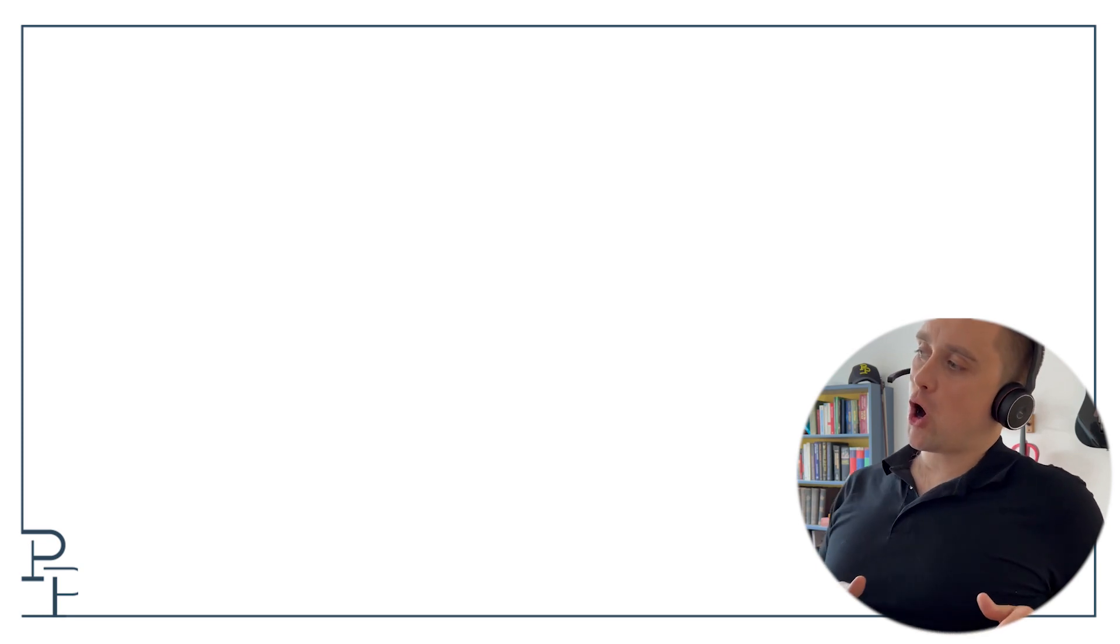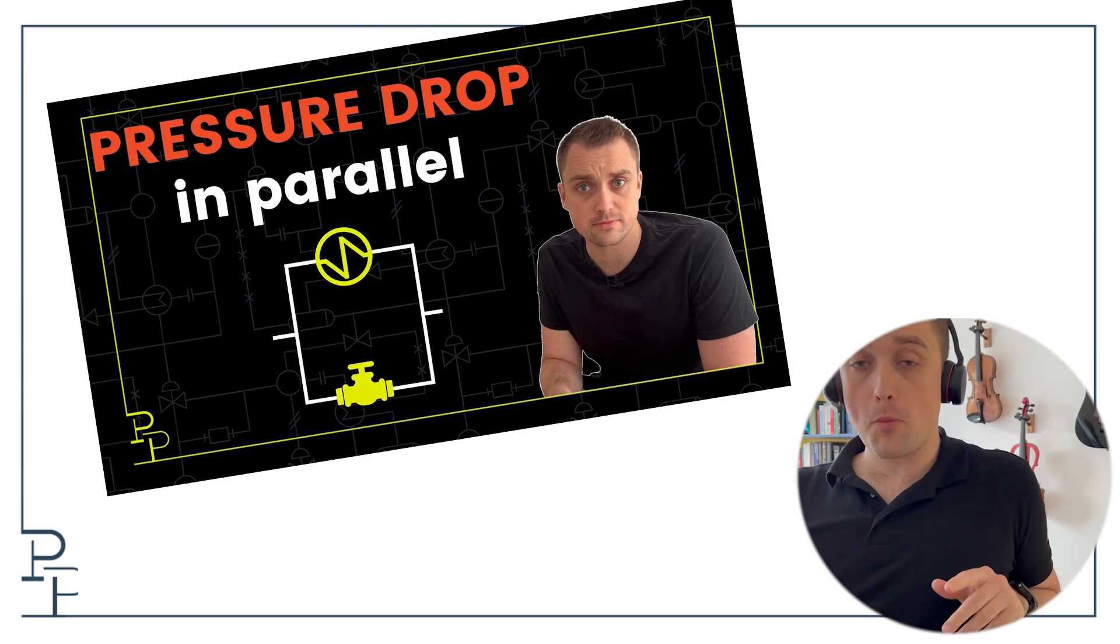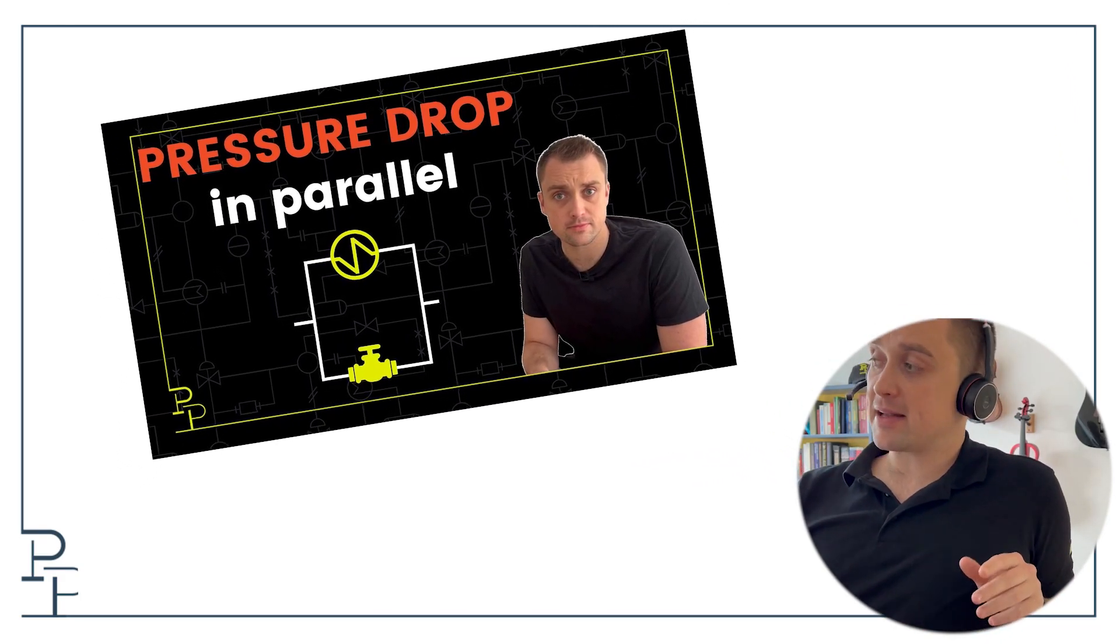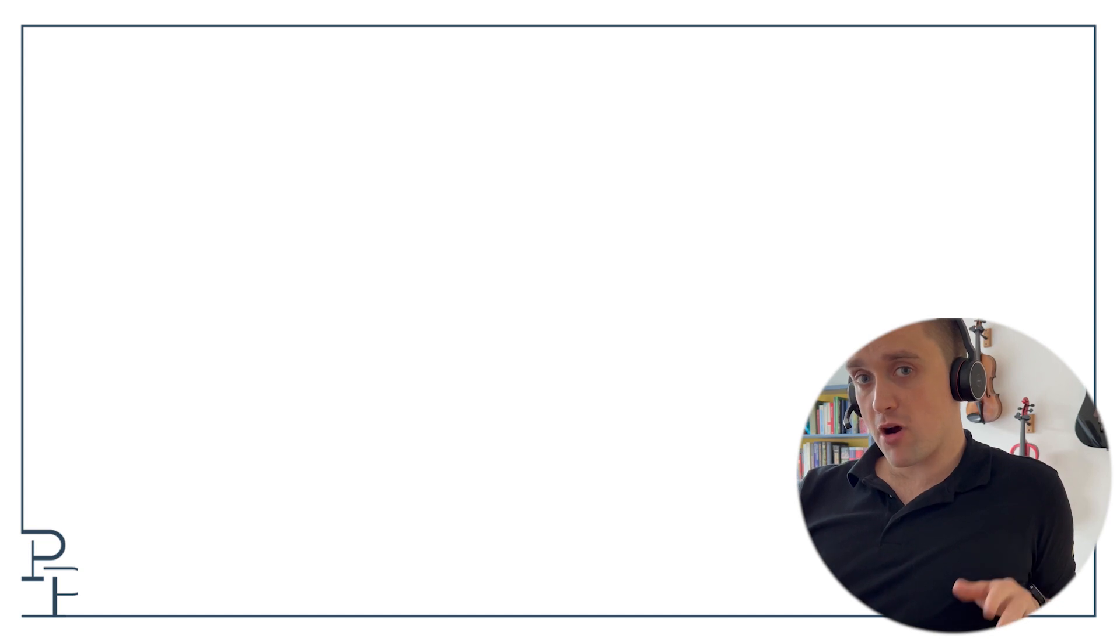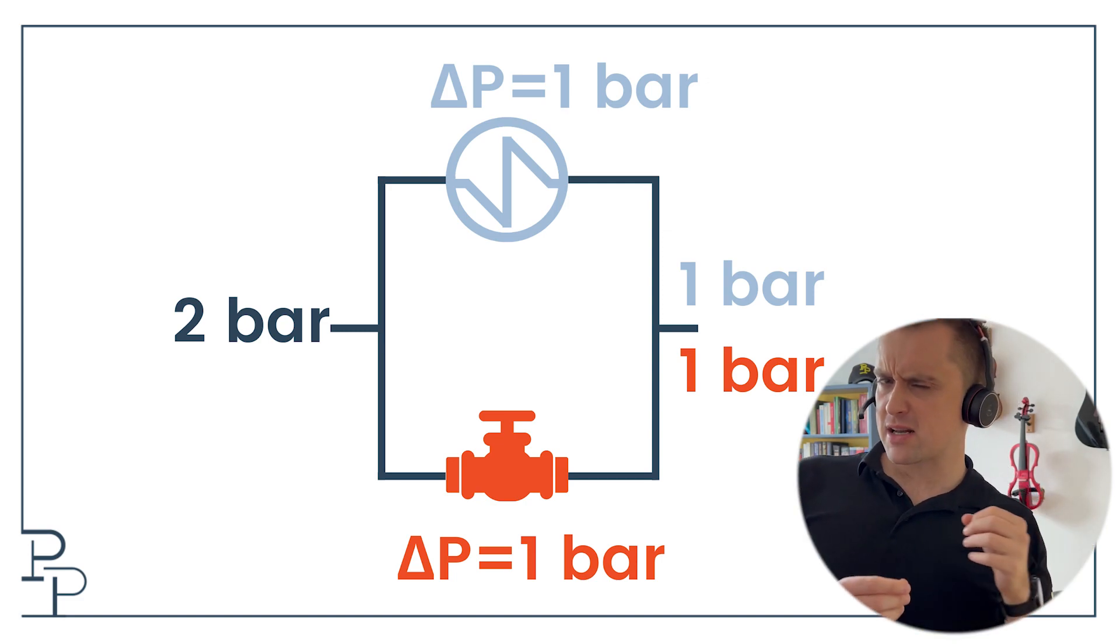I recorded a video on pressure drop and flow analysis for parallel branches, and two people quickly pointed out that I was only considering branches that originate at the same point and then converge to the same point. There's a specific reason I did that.